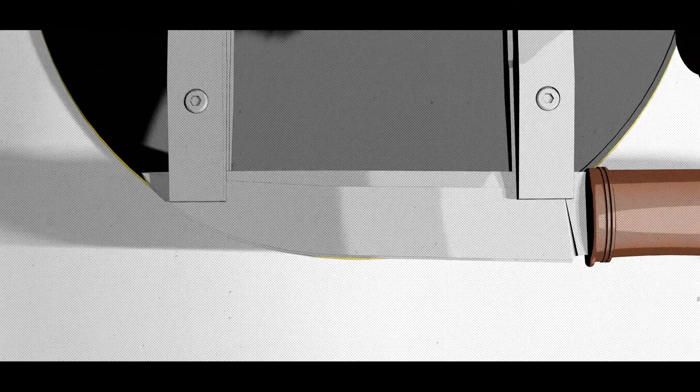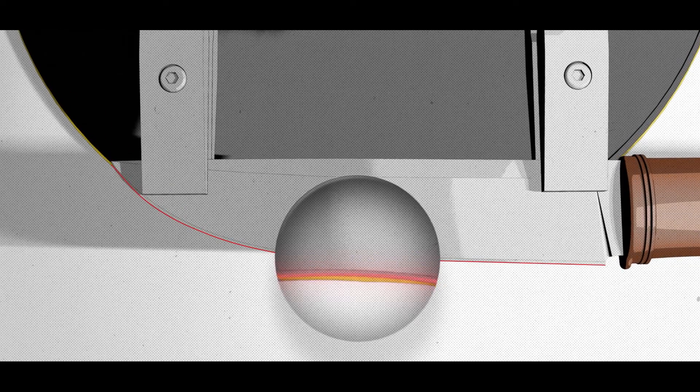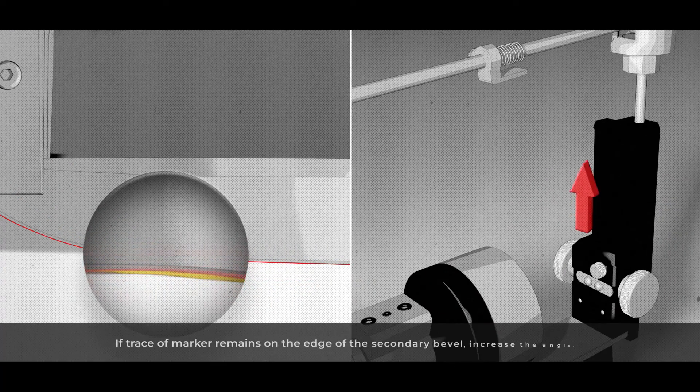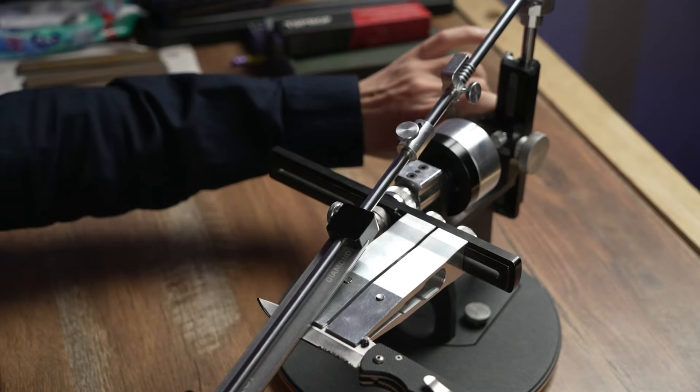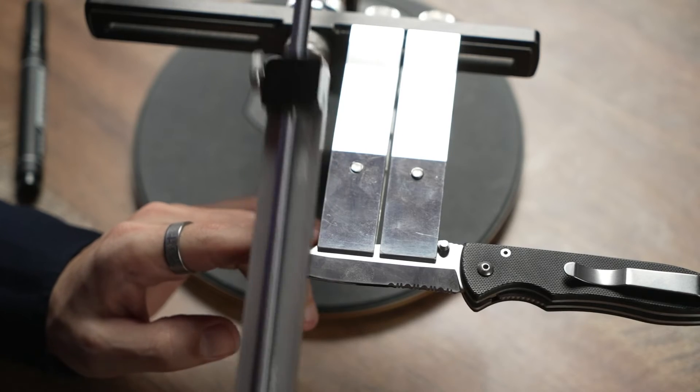In accordance with what we see during the sharpening, if the marker remains on the cutting edge, which means we are not reaching it, we have to increase the angle to reach it.